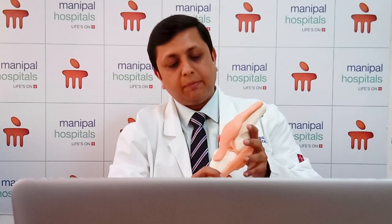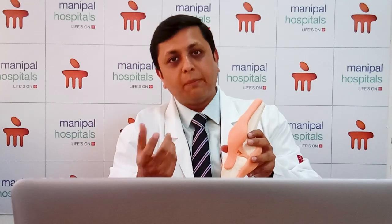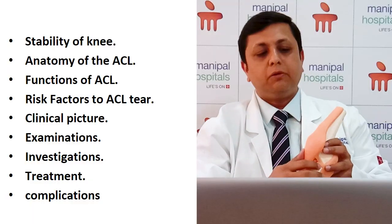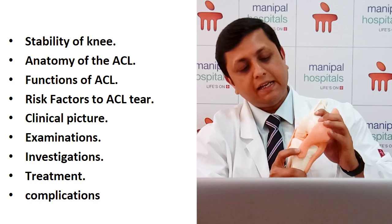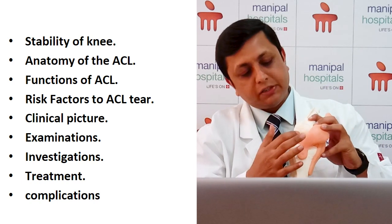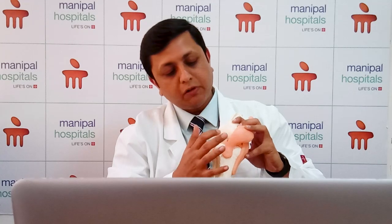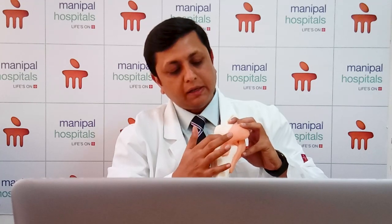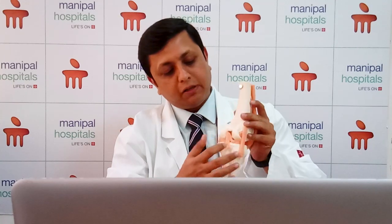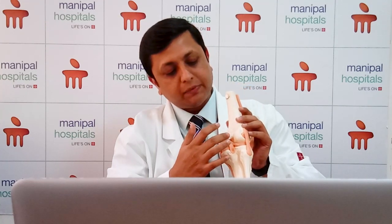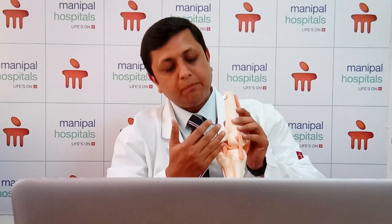These ligaments are the most important structures giving stability to the knee joint. The ACL ligament is a band that attaches from the thigh bone going down to the leg bone and is situated in front of the knee. There is another ligament called the PCL, which also attaches from the thigh bone to the leg bone but is on the back of the knee.